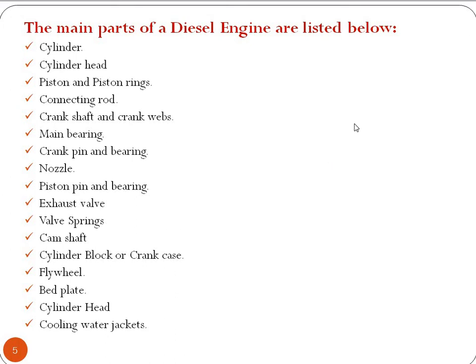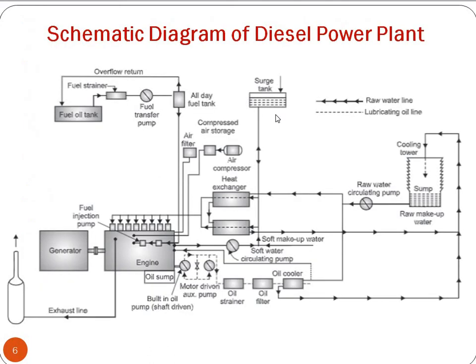In the practical session, you have to draw the schematic diagram which is shown in this slide. You can draw it on a drawing sheet or plain paper and you have to mention the parts of the diesel power plant in the form of a schematic diagram and name the parts. You also have to show the flow of fuel, flow of oil and coolant in the radiator, and how the diesel power plant operates — that is, the flow diagram of the diesel power plant — and explain it in the schematic diagram.